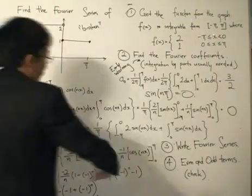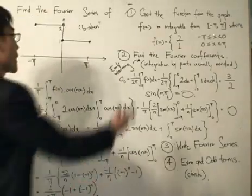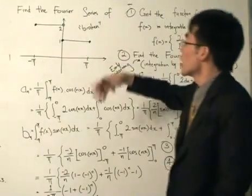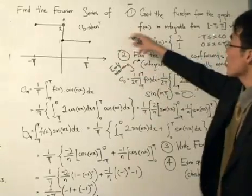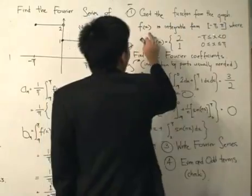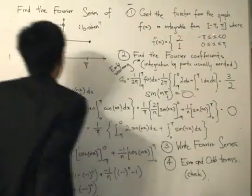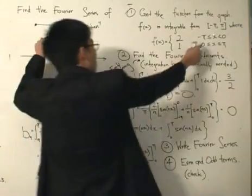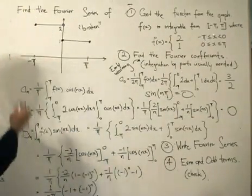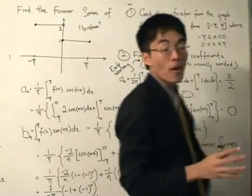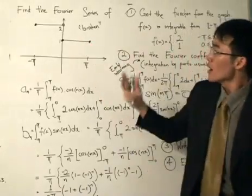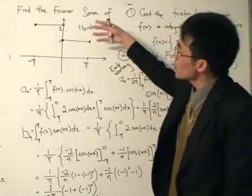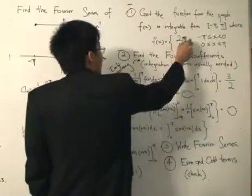I've written the steps one to four and I'll go through them in their entirety. Step number one: get the function from the graph. We need to define the function f(x), or else we can't apply the Fourier series formula. Our function f(x) is integrable from minus pi to pi, where f(x) equals two when x is from minus pi to zero, and equals one when x is from zero to pi. Just look at the graph and see whether you can define the function. For broken functions, most of the time they will be defined by constants for a certain domain.